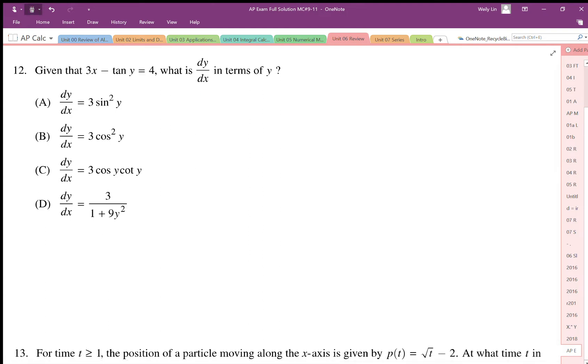Differentiating this expression, I'm going to end up with 3 minus, derivative of tan is secant squared, the variable is y. So as I differentiate a function of y, I need to then apply the chain rule, which is y prime or dy by dx.